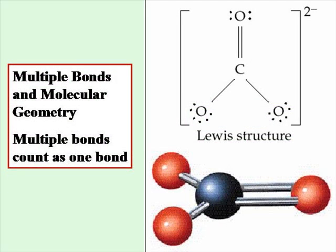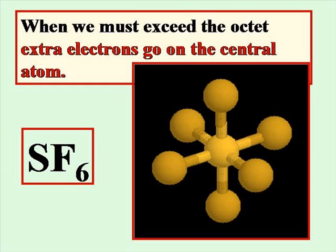When you are building your molecules, multiple bonds do not affect your molecular geometry — multiple bonds will be counted as one bond. So if you were counting the number of bonds around a carbon, you would count one, two, three, with no lone pairs. So that shape, based on your rules, would be trigonal planar. Again, with more advanced molecules, when you must exceed the octet rule, your extra electrons will go on the central atom. Here you can see that sulfur is holding a total of twelve pairs of electrons around it.